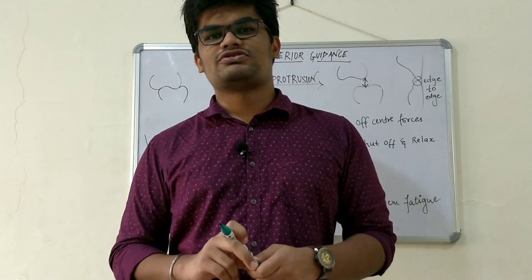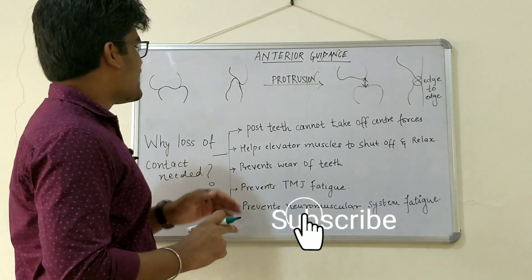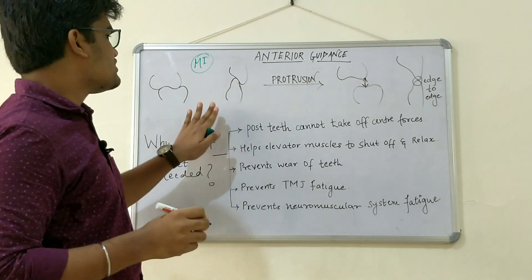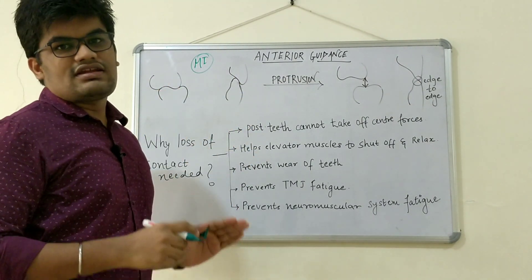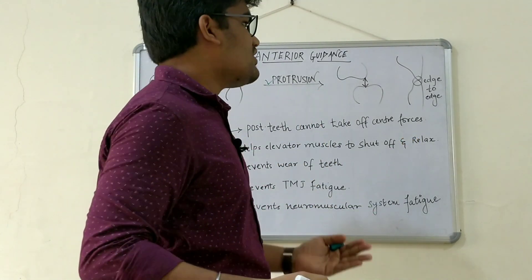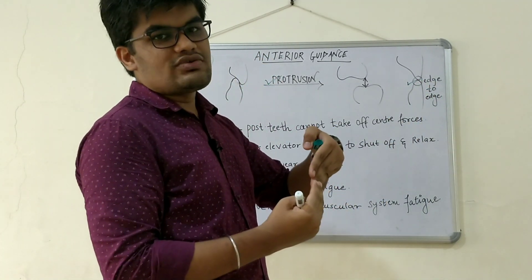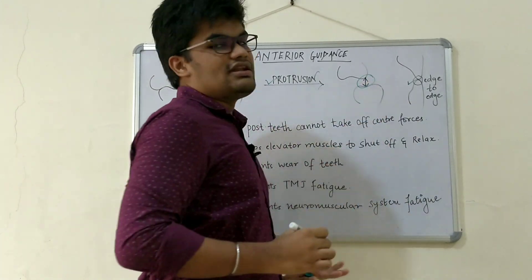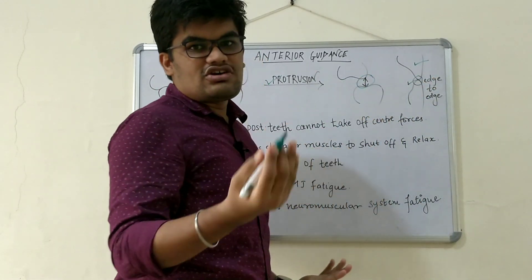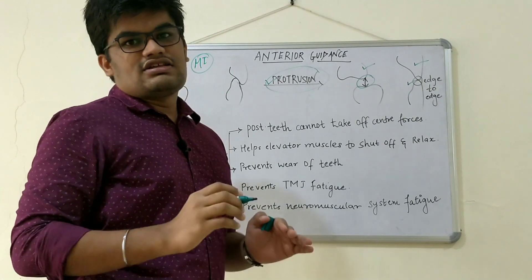Welcome back. Today we'll be learning about anterior guidance. Consider this figure showing the position of maximum intercuspation, where incisors and molars are in their regular contact. Whenever the jaws undergo protrusion, the anterior teeth come to an edge-to-edge position, and the posterior teeth lose contact. This property, in which the front teeth ensure that the posterior teeth lose contact on protrusion, is called anterior guidance.